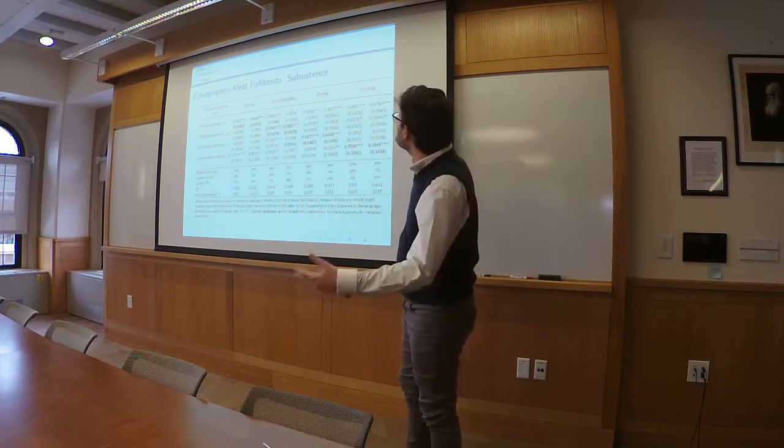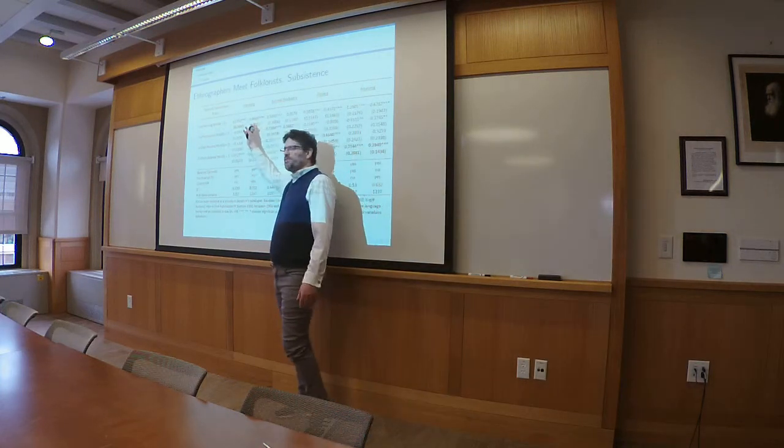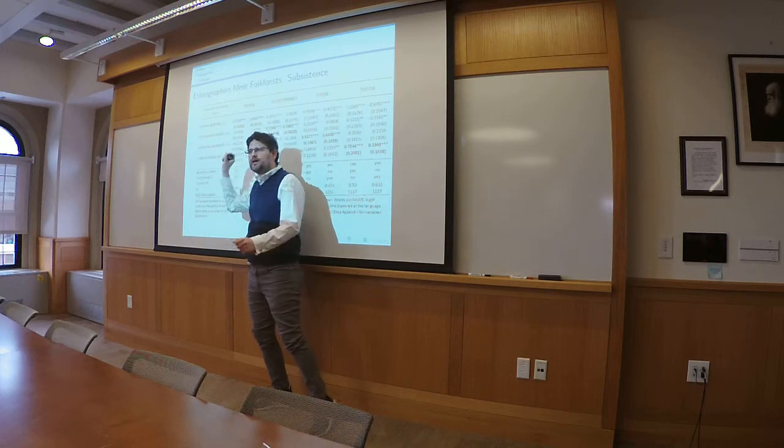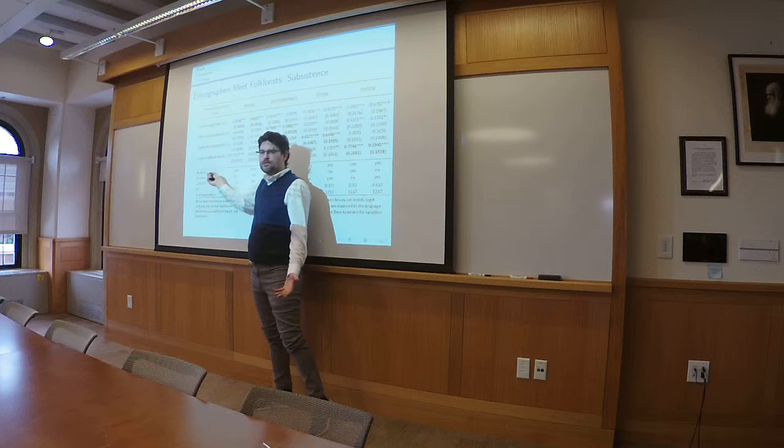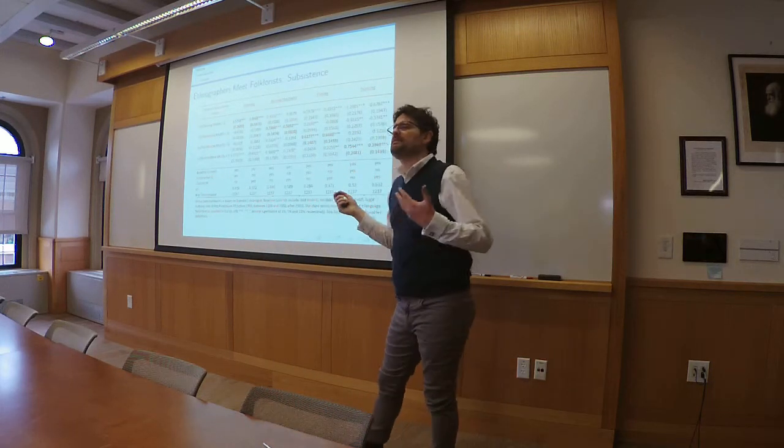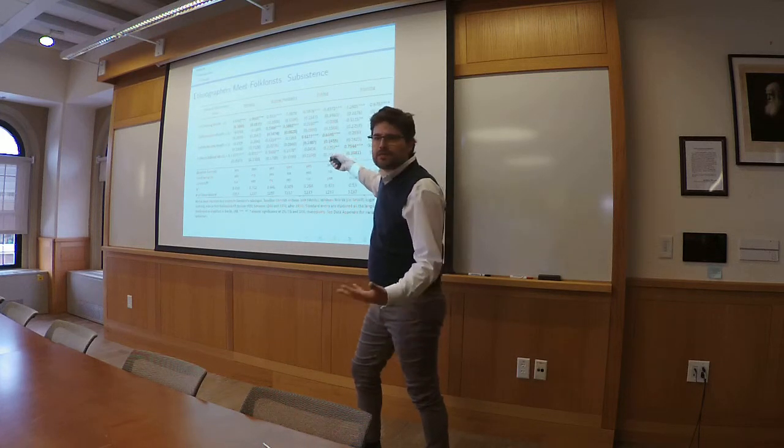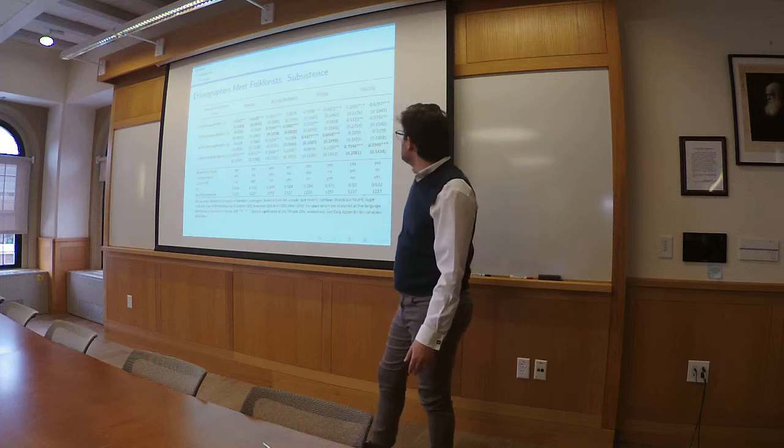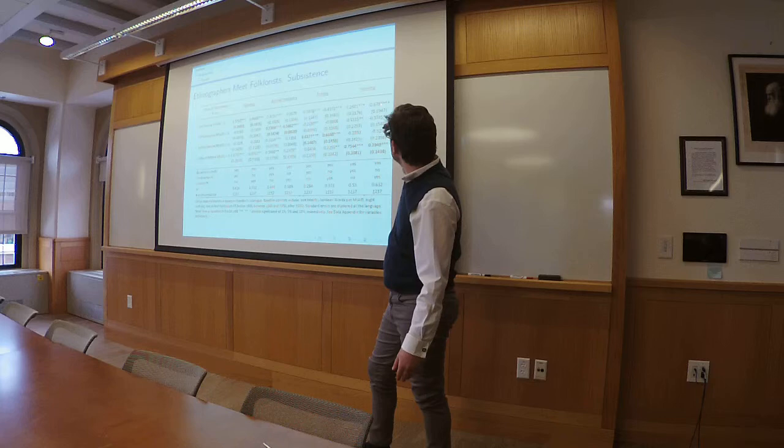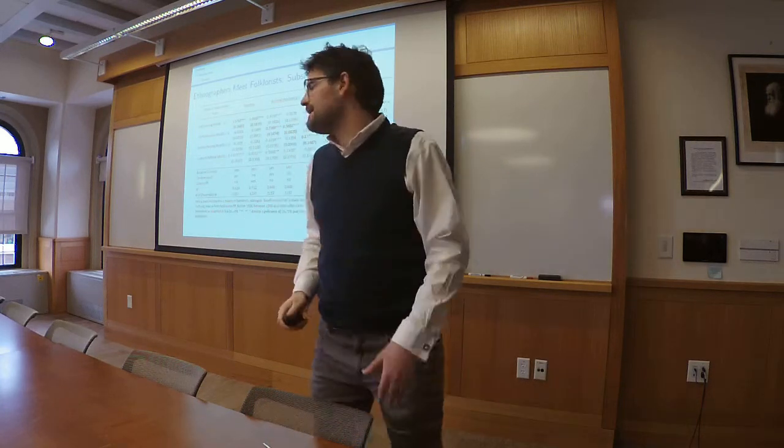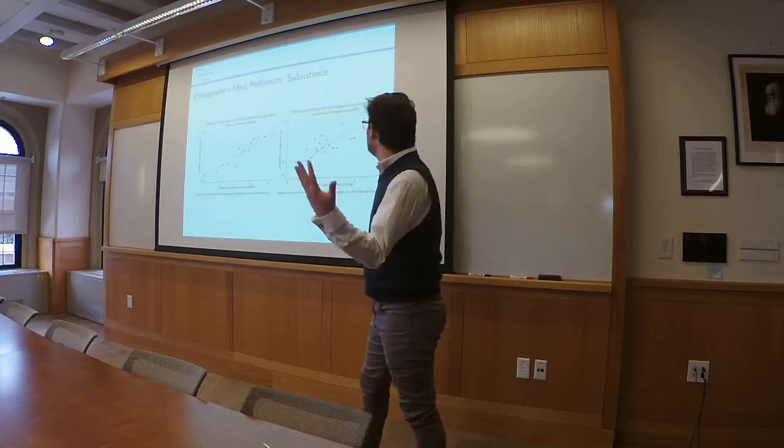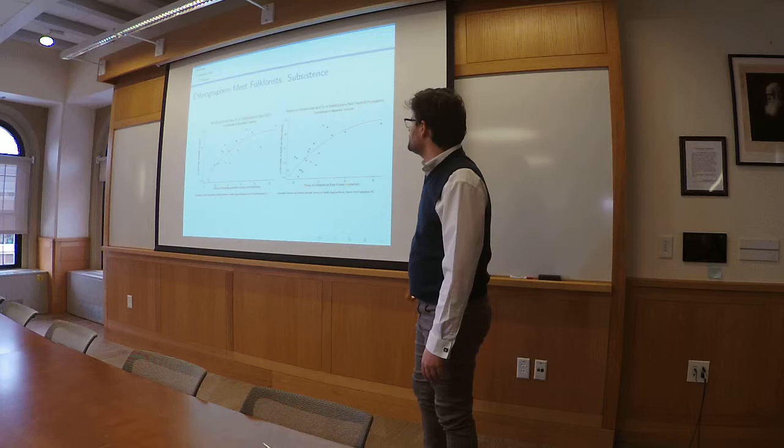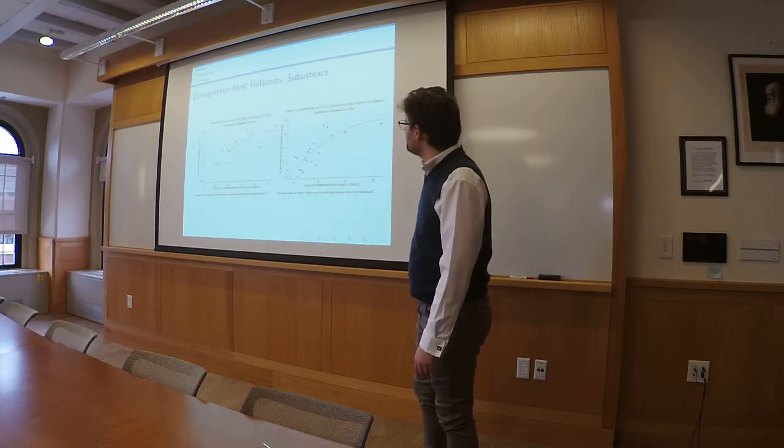Here's some conditional correlations. Dependent variable is the share of subsistence that comes from the given activity: farming, animal husbandry, fishing, and hunting. Here is the number of motifs that are about agriculture, about pastoralism, about fish, about hunting. They come with the expected signs. Cultures that are heavy on pastoralism will have many stories, many pastoral motifs, and also some stories about hunting. Similarly, hunters will talk a lot about hunting stuff, they will not have motifs on agriculture. It's smell tests that tell you there's something real. These are the scatter plots, bean scatter plots about the relationship of X and Y.